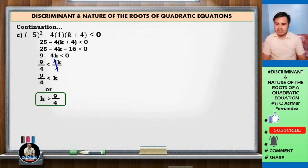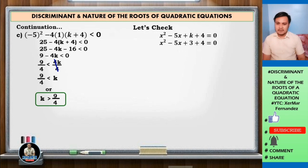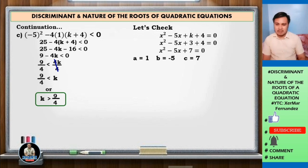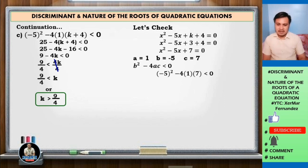9 over 4 is 2.25, so k must be greater than 2.25. Let k equal 3. Substituting: x squared minus 5x plus 3 plus 4 equals 0, which gives x squared minus 5x plus 7 equals 0. Here a equals 1, b equals negative 5, c equals 7. Check: negative 5 squared minus 4 times 1 times 7 is less than 0. That gives 25 minus 28 equals negative 3, and negative 3 is less than 0. Check.